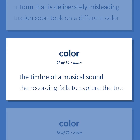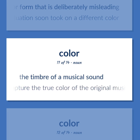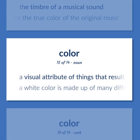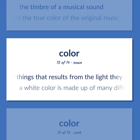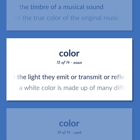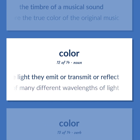The timbre of a musical sound. The recording fails to capture the true color of the original music. A visual attribute of things that results from the light they emit or transmit or reflect. A white color is made up of many different wavelengths of light.